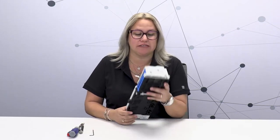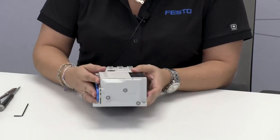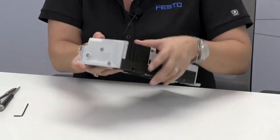First of all, we can see here in order to disassemble the valves we're going to take off these three screws and for that we're going to need an allen key.